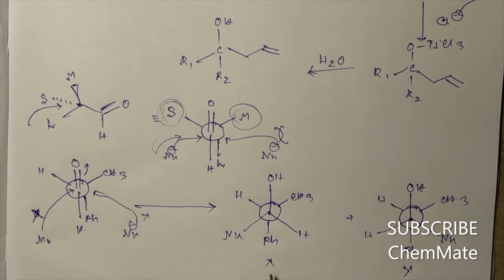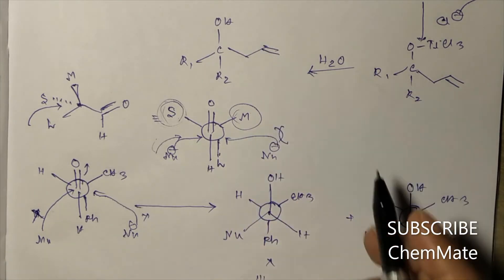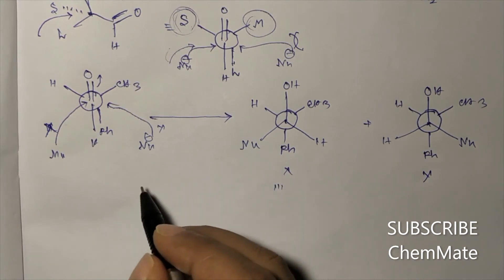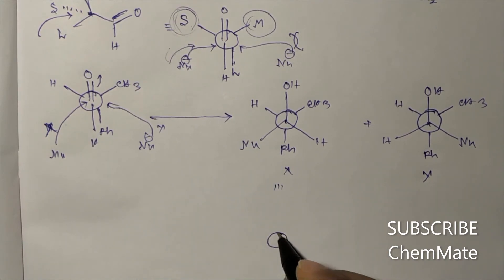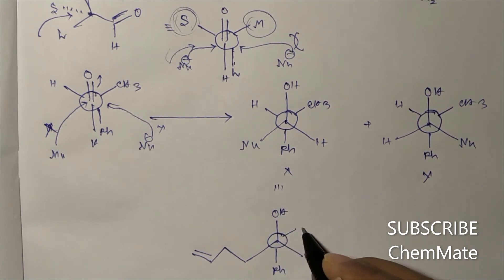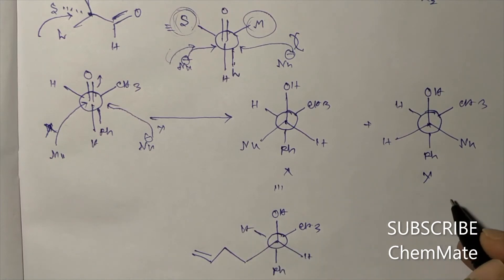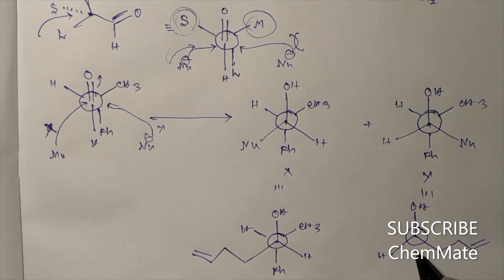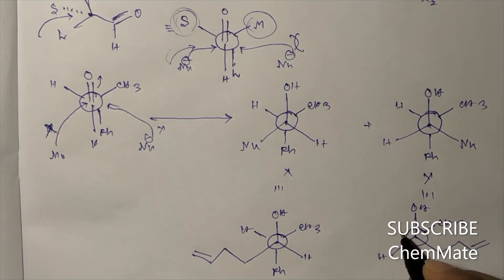The nucleophile is actually an allyl group, so we can represent it explicitly. In product X: OH on one face, allyl group attached, with Ph, CH₃, and H in their respective positions. In product Y: OH on the other face, allyl nucleophile attached, with H, Ph, and CH₃ arranged accordingly.